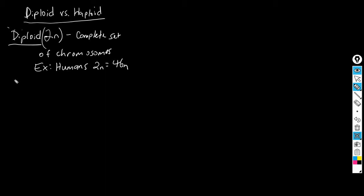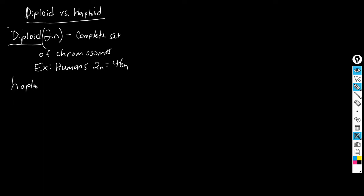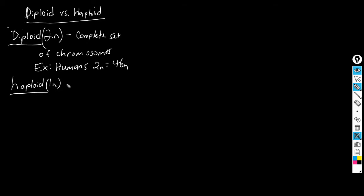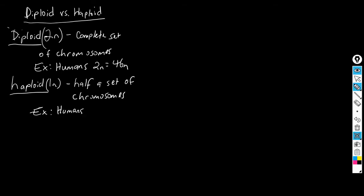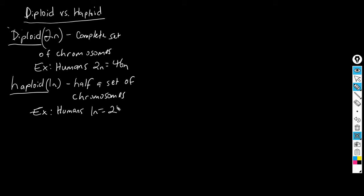The other term is haploid. Haploid is represented as 1n, and we can define that as having half a set of chromosomes. Using the same example of humans, our haploid number is 23n, because 23 is half of 46.